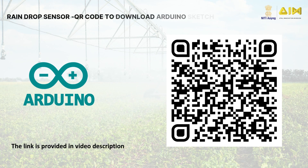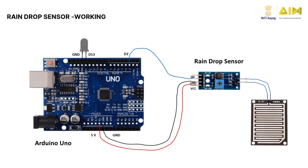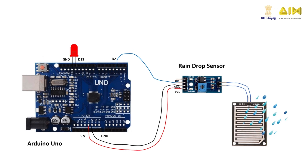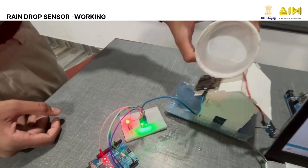Scan this QR code to download the Arduino sketch for the raindrop sensor and upload it to the Arduino board. After powering on the Arduino board, you can see the LED lights are off when there are no water droplets, and it lights up when you pour a few small droplets of water on the raindrop sensor's plate. Hope you learned something new today.